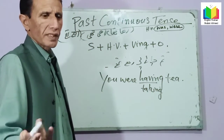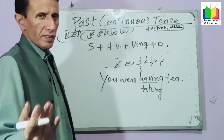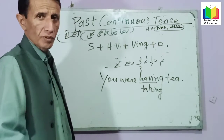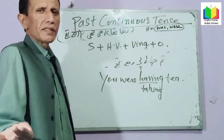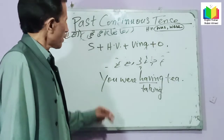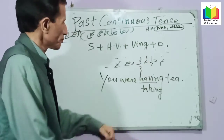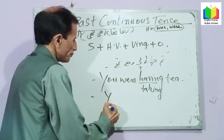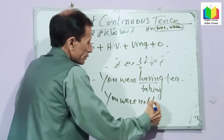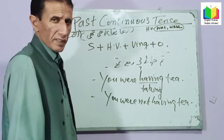When I say 'have tea', 'have a cup of tea', 'have a glass of milk', 'have some syrup', 'have some food' — it means to eat or drink. So 'having' here means consuming. You were having tea. Negative: You were not having tea.